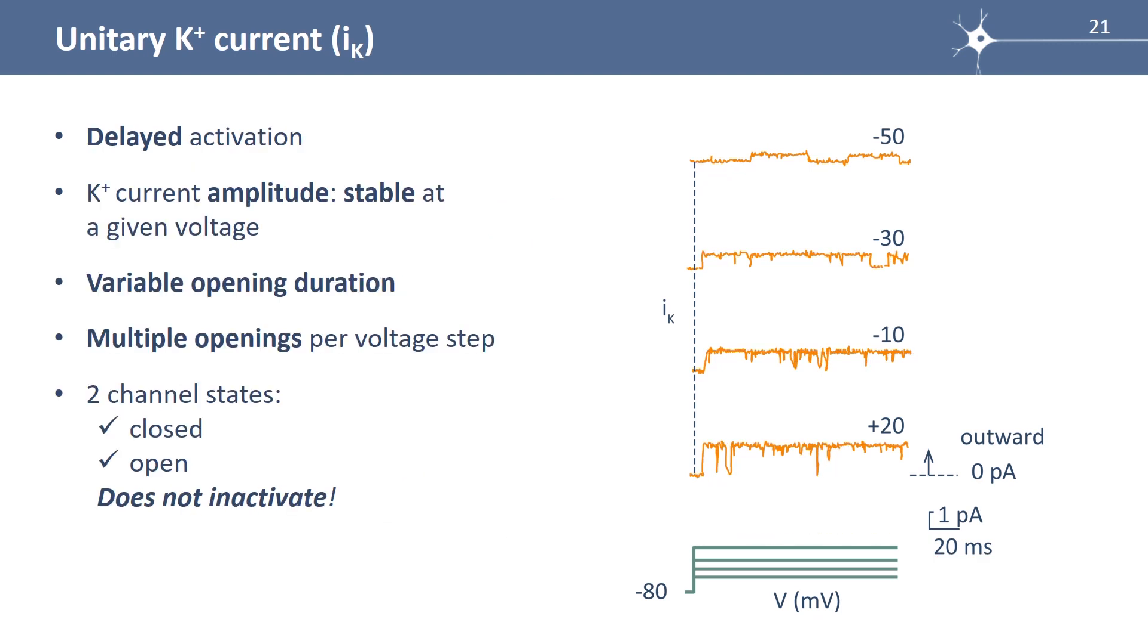So if we summarize, this channel has a delay of activation. The amplitude of the potassium current is stable for a given voltage. Here, for example, you have the same amplitude of the current for a given voltage. You have variable opening duration. You see here that you have a very long duration or a smaller duration, and multiple openings per voltage step. And only two channel states, closed and open, this channel does not inactivate.